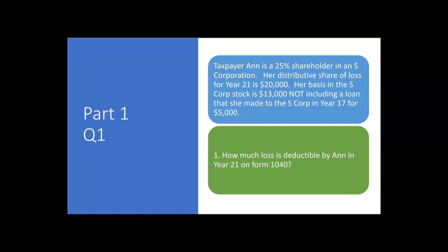All right let's start with this. Taxpayer Ann is a 25% shareholder in an S-Corp. Her distributive share of loss for year 21 is $20,000. Her basis in the S-Corp stock is $13,000, that's her stock basis. Not including a loan that she made to the S-Corp back in year 17 for $5,000. So that $5,000 is her debt basis.